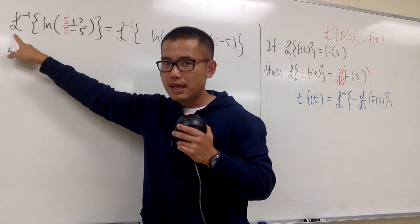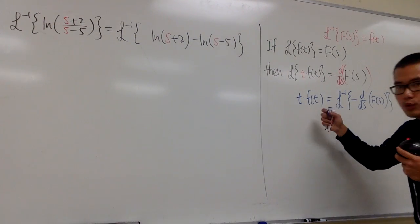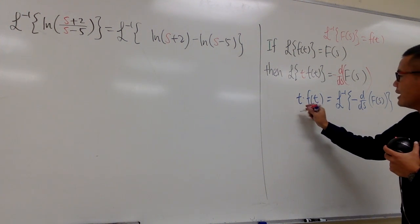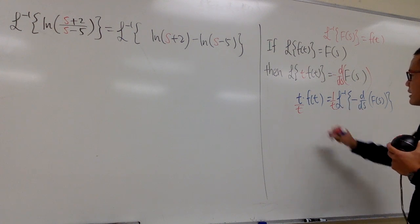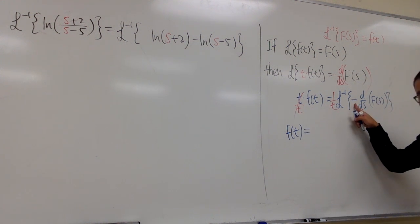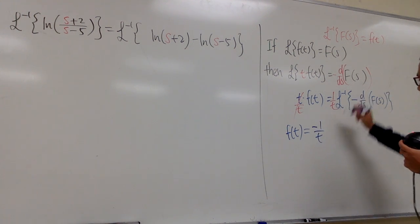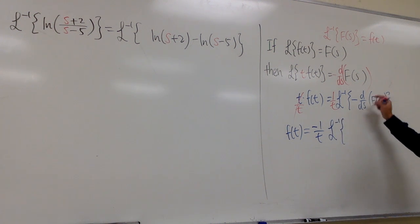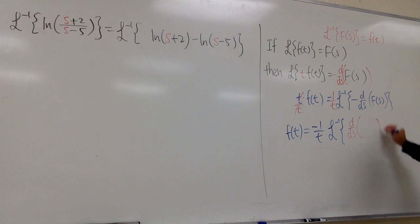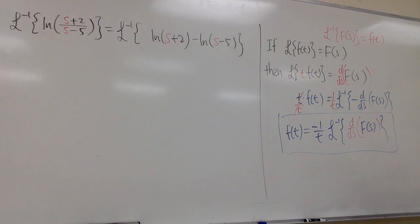We have the inverse Laplace and the function in the s-world; our goal is to find f(t). Taking the inverse Laplace of both sides of L{t·f(t)} = -d/ds[F(s)] and then dividing both sides by t, we isolate f(t) = (-1/t) · L⁻¹{d/ds [F(s)]}. This is another form of the theorem, which I'll highlight in blue.